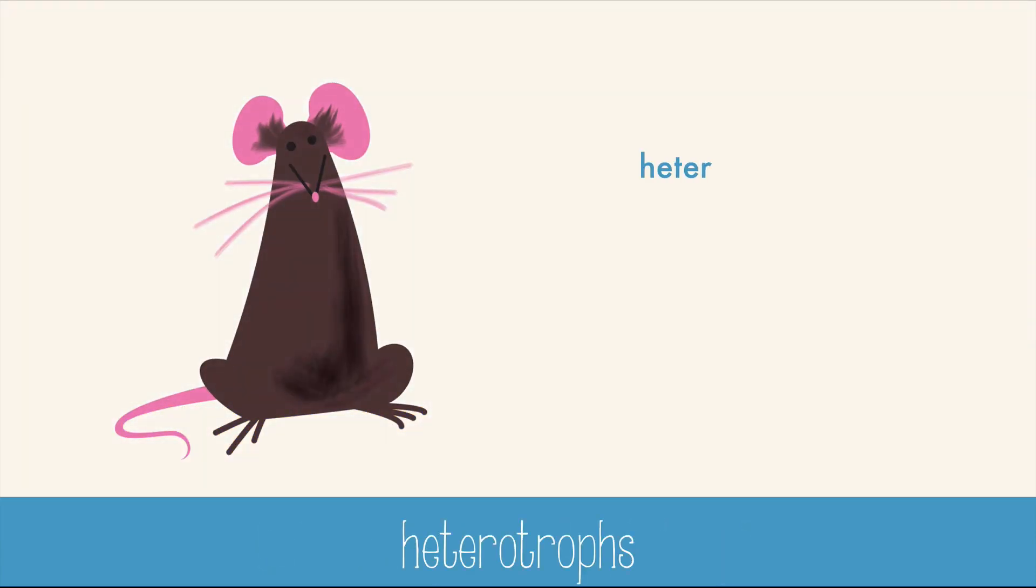Hetero means other, and troph means food, so heterotrophs must eat other food for energy. A rat might eat plants, seeds, and insects, and you may eat carrots, hamburgers, or ice cream. But your body needs to consume food for energy. You can't just create energy out of thin air.